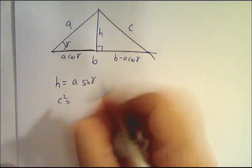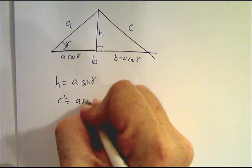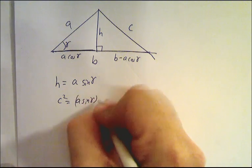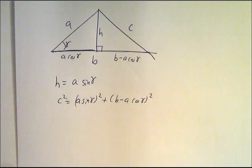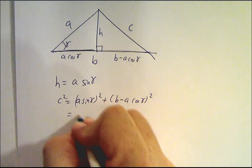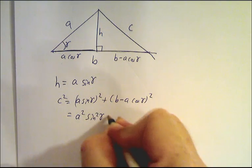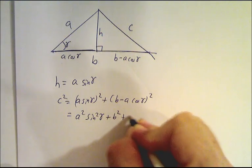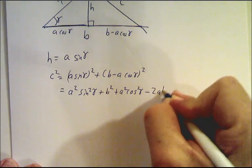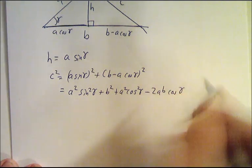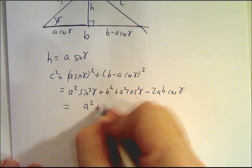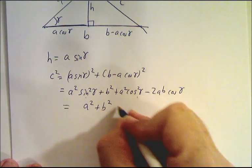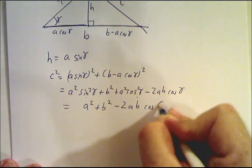And we've got C squared is equal to A sin gamma squared plus B minus A cos gamma squared, which is A squared sin squared gamma plus B squared plus A squared cos squared gamma minus 2AB cos gamma. But sin squared plus cos squared is one. So this is A squared plus B squared minus 2AB cos gamma.